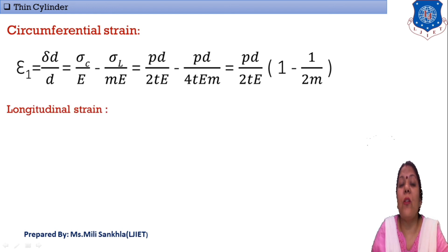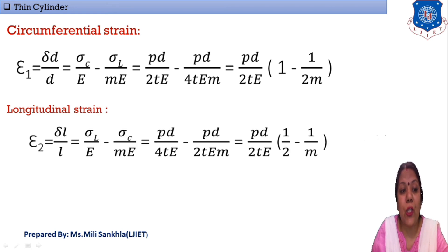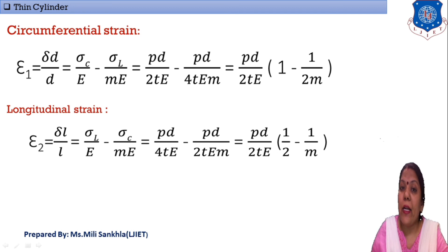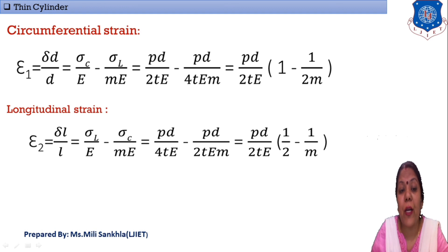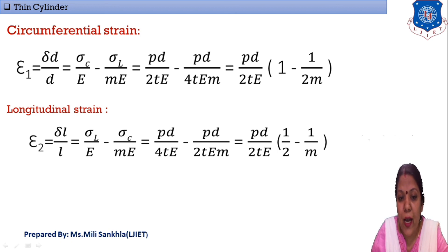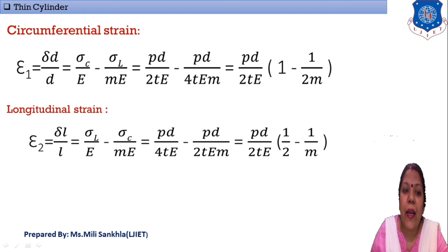Now longitudinal strain, denoted ε₂. If strain is induced along the length, ε₂ = ΔL/L. The equation for longitudinal strain with respect to stresses is: ε₂ = σl/E − σc/(ME) = pd/(4tE) − pd/(2tEM). Factoring out pd/(2tE), we get ε₂ = (pd/2tE)(1/2 − 1/M). In examples we can use either form of these equations.